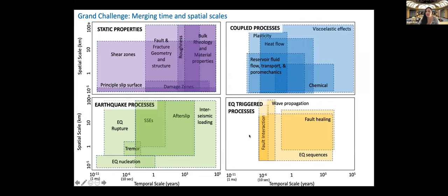The grand challenge in this area is to develop a single numerical code able to solve all the relevant equations for a likely incomplete laundry list of processes relevant to geomechanics and the earthquake cycle. These properties can be lumped into four general categories, where the vertical axis represents spatial scale and the horizontal axis represents temporal scale. The takeaway is that collectively these properties span almost 10 orders of magnitude on the spatial scale and maybe up to 20 orders of magnitude on the temporal scale.